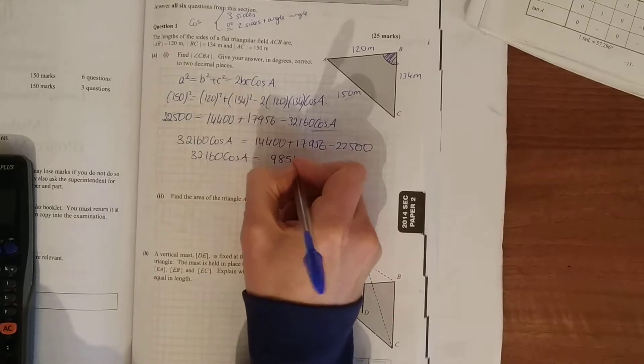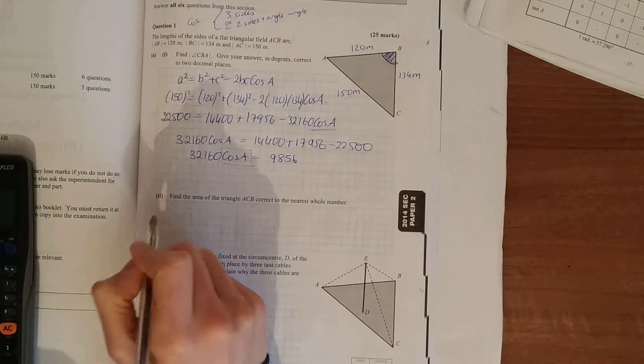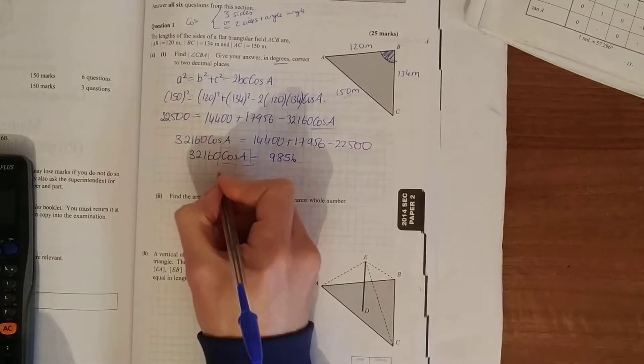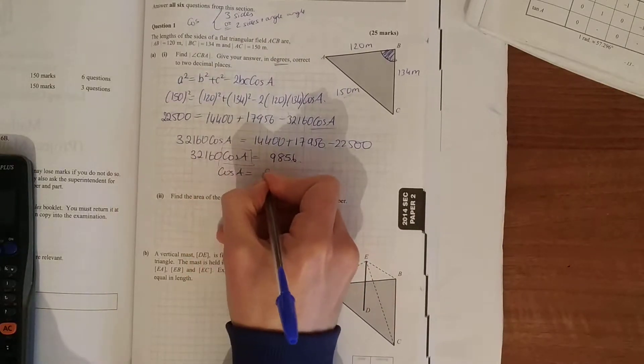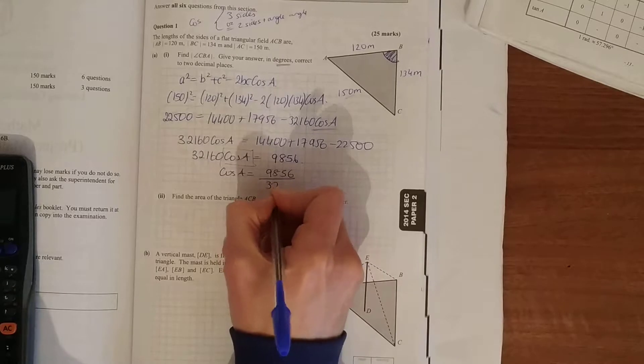So we want to get the cos A at a certain degrees. So cos A, to get it on its own, we divide 9,856 over 32,160.